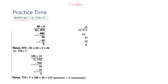672 is your dividend and 21 is your divisor. I have written 672 inside the box and 21 over here. You have to go for that number — you will multiply 21 by that number so that you will get a product less than 672.